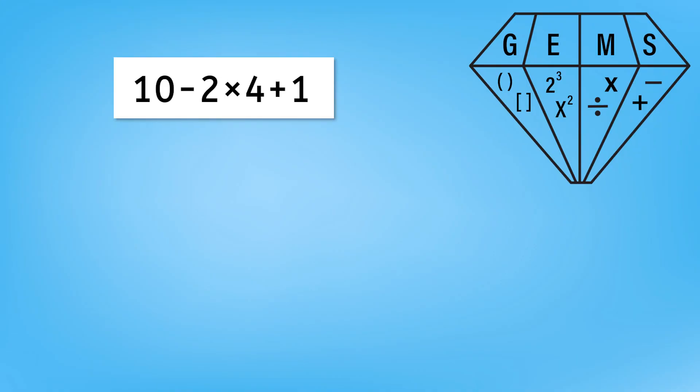Now it's time to drill into our new skills and practice using GEMS. Let's solve the equation 10 minus 2 times 4 plus 1. Pause the video here and solve using your new understanding of the order of operations.